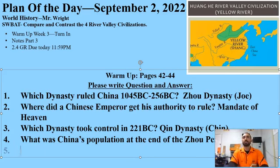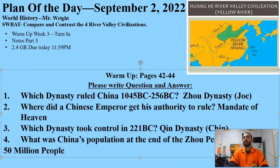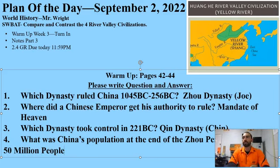Number four, towards the end of the Zhou period, what was China's population? China reached a population of over 50 million people by the end of the Zhou dynasty. That concludes our warm-up for today.